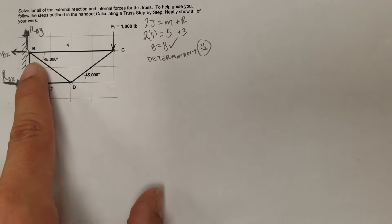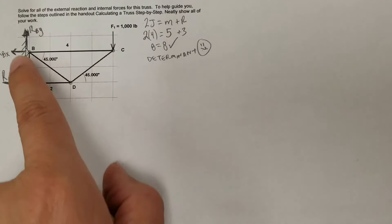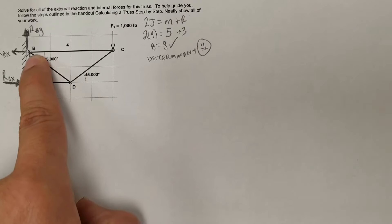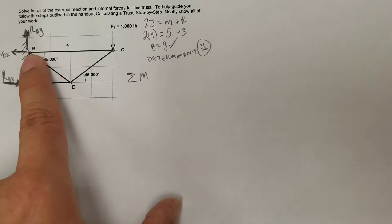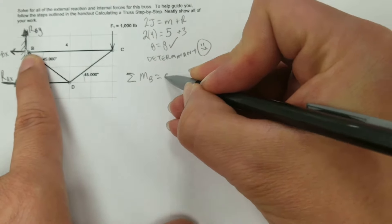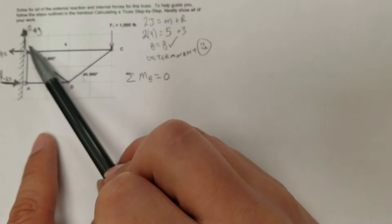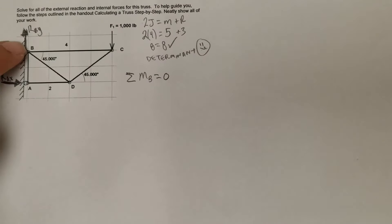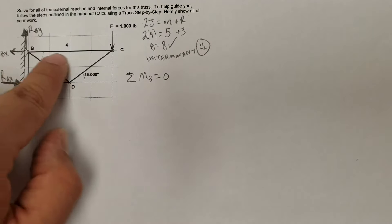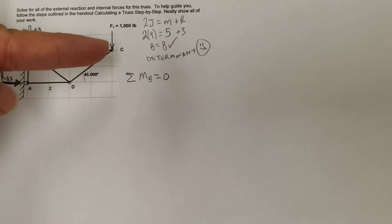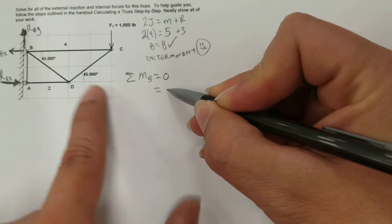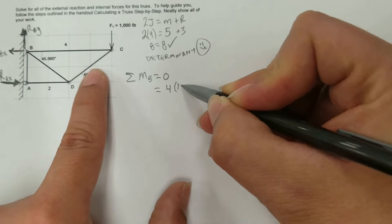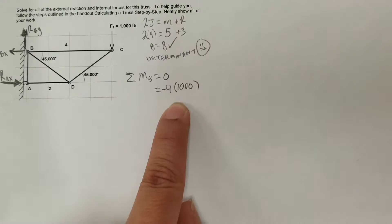I always like to start with the sum of the moments about the pin. The pin has two reaction forces, so taking moments about it eliminates those unknowns and gives you another unknown right away. I'm going to take the sum of the moments about B, set that equal to zero. The distance to the load C is 4, and since that force creates a clockwise rotation it's negative, so we have −4 × 1000.